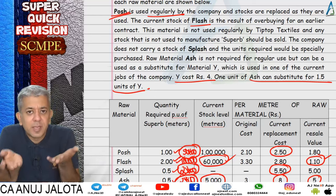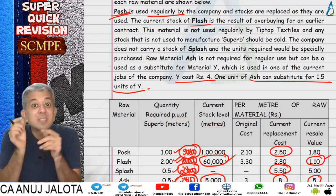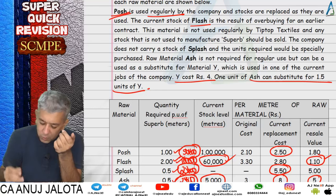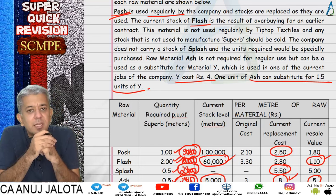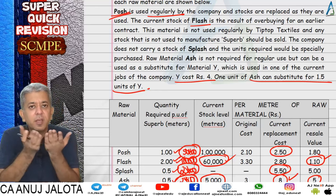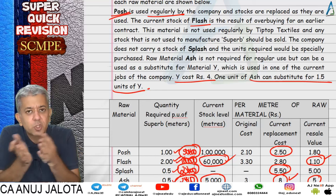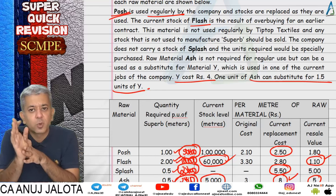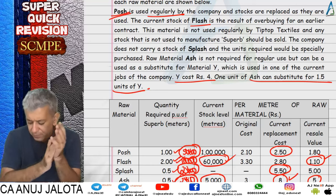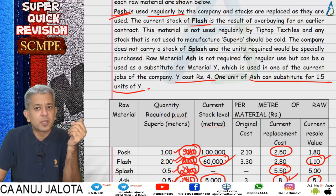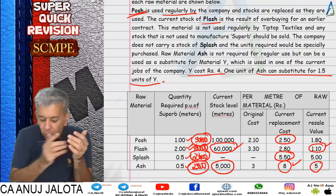If the offer comes and you use Ash for Superb, you lose 6 rupees. There's also the option to buy from market at 8 rupees. We chose whichever cost was lower. So ultimately the relevant cost in this case was rupees 5. That part of the question was done. Then we proceeded to the labor adjustments, which were very classy.